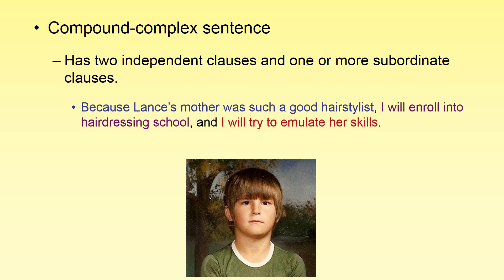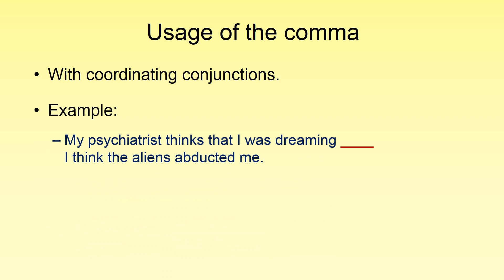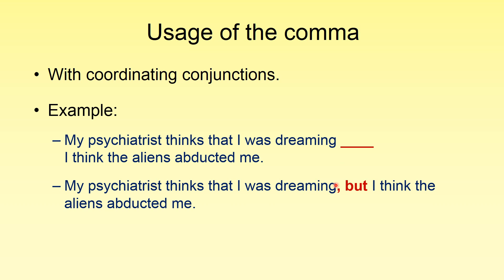Let's move on to the usage of the comma. The comma can be used in many ways in English. One usage we've already looked at is with coordinating conjunctions: and, but, or, for, nor, yet, so. We know coordinating conjunctions join independent clauses, so we look for independent clauses on either side and insert the correct coordinating conjunction with a comma before it. For example: 'My psychiatrist thinks that I was dreaming, but I think the aliens abducted me.' Yet and and would also work here. Remember that coordinating conjunctions can be interchangeable — go through the list and see which one suits your meaning best.